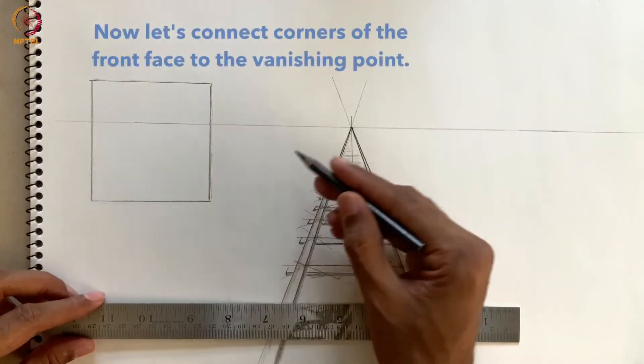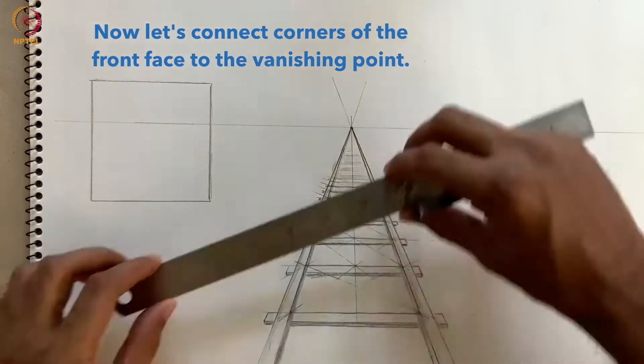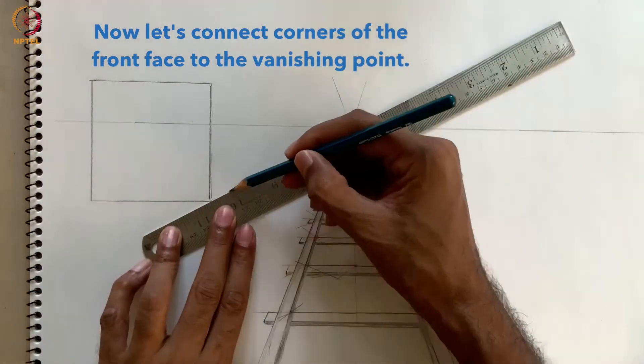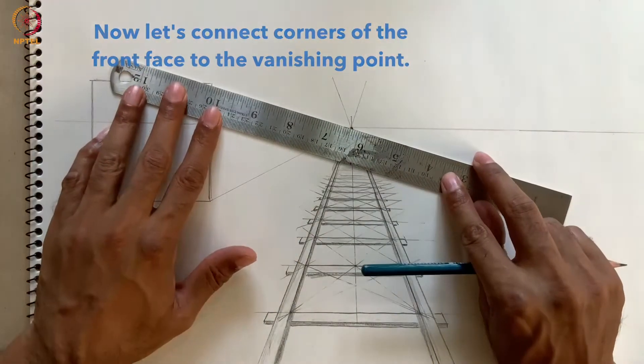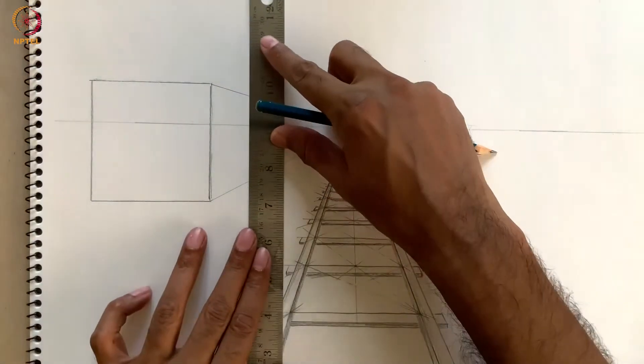Now we can connect all the corners of the front face of the box to the vanishing point. Note that two of the edges are not visible due to the placement of the box.